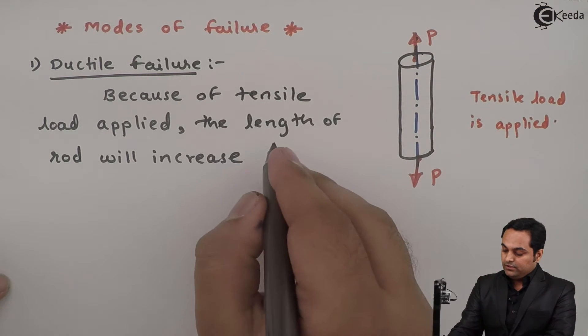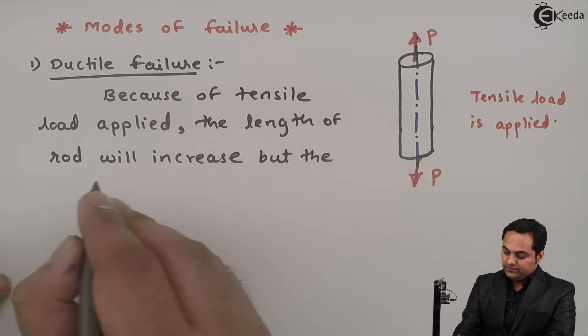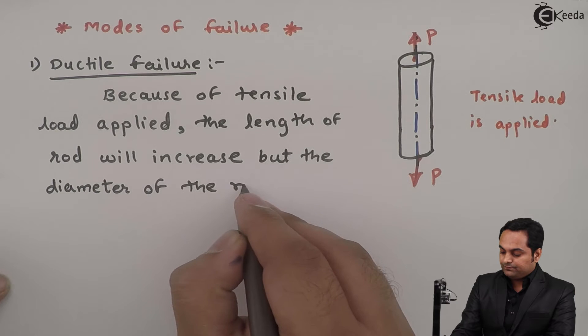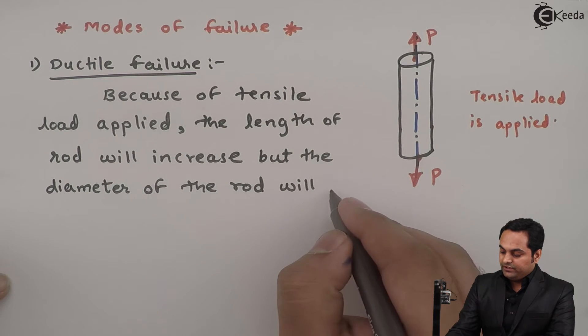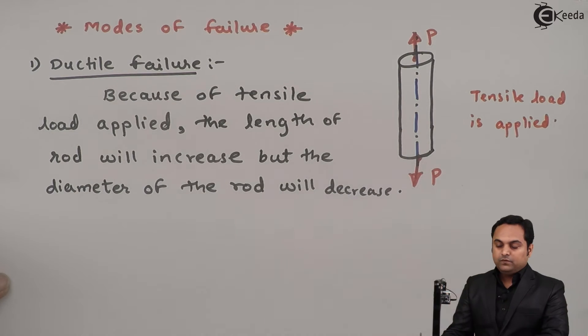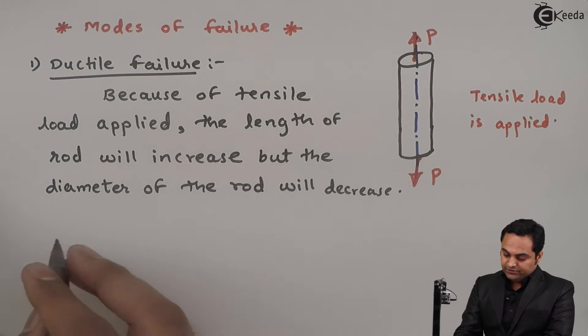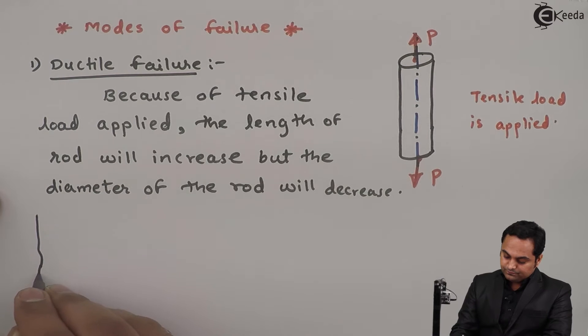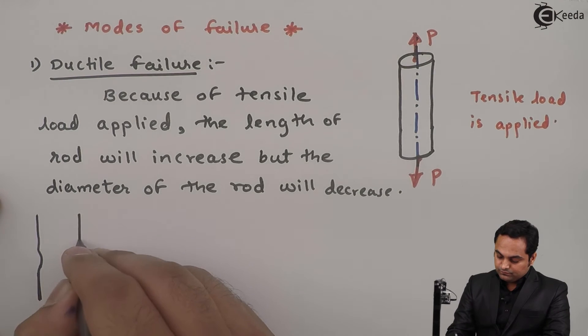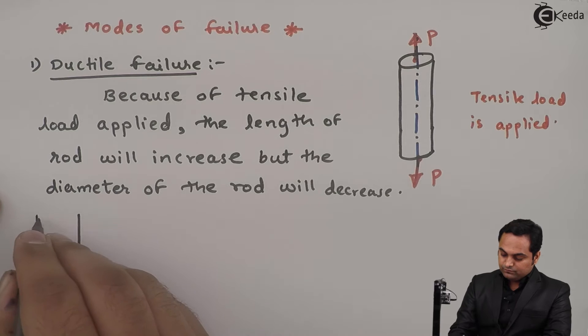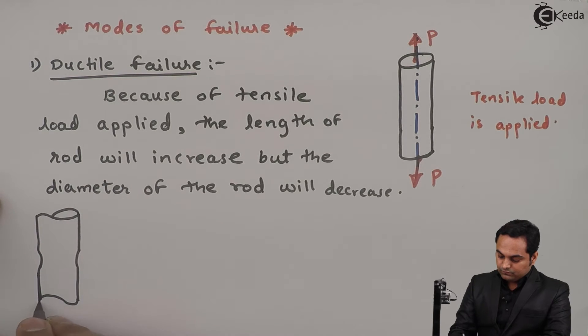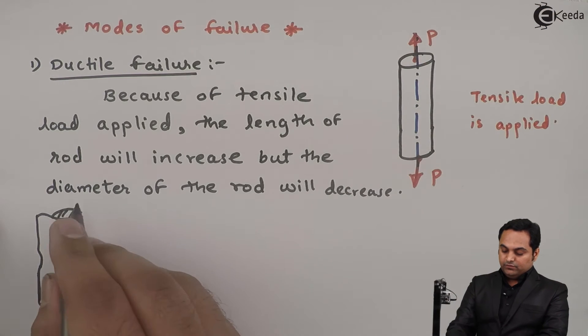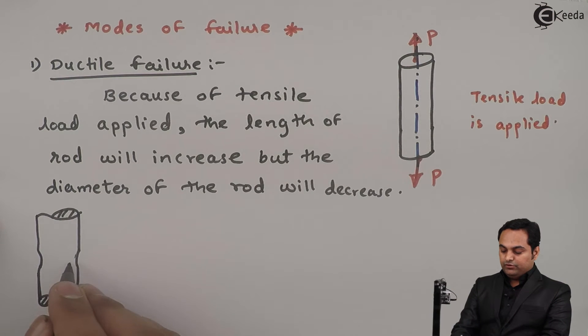Next I'll draw the different stages of how it will look like. When the load is tensile, length will go on increasing, diameter will go on reducing slightly. There will be further reduction in area, area will go on reducing.